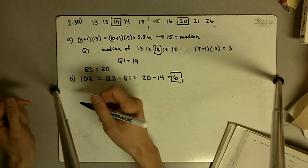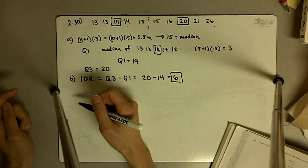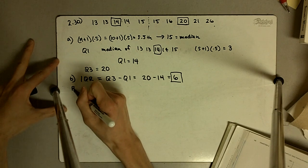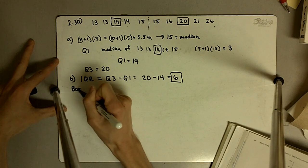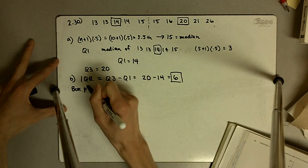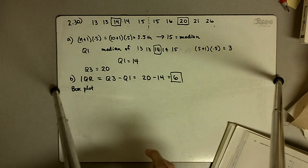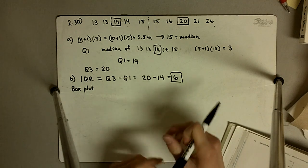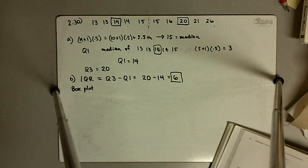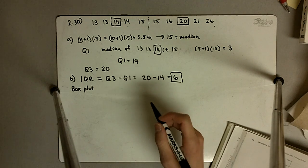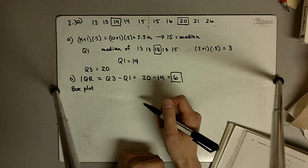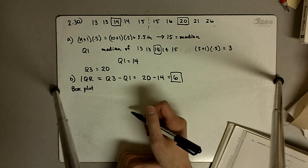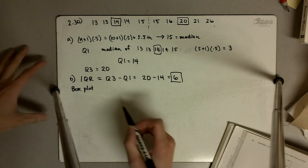For this last part, instead of answering part C, I've asked you to make a box plot of the data. So in this case, we already have three important pieces, which are the median, Q1, and Q3.